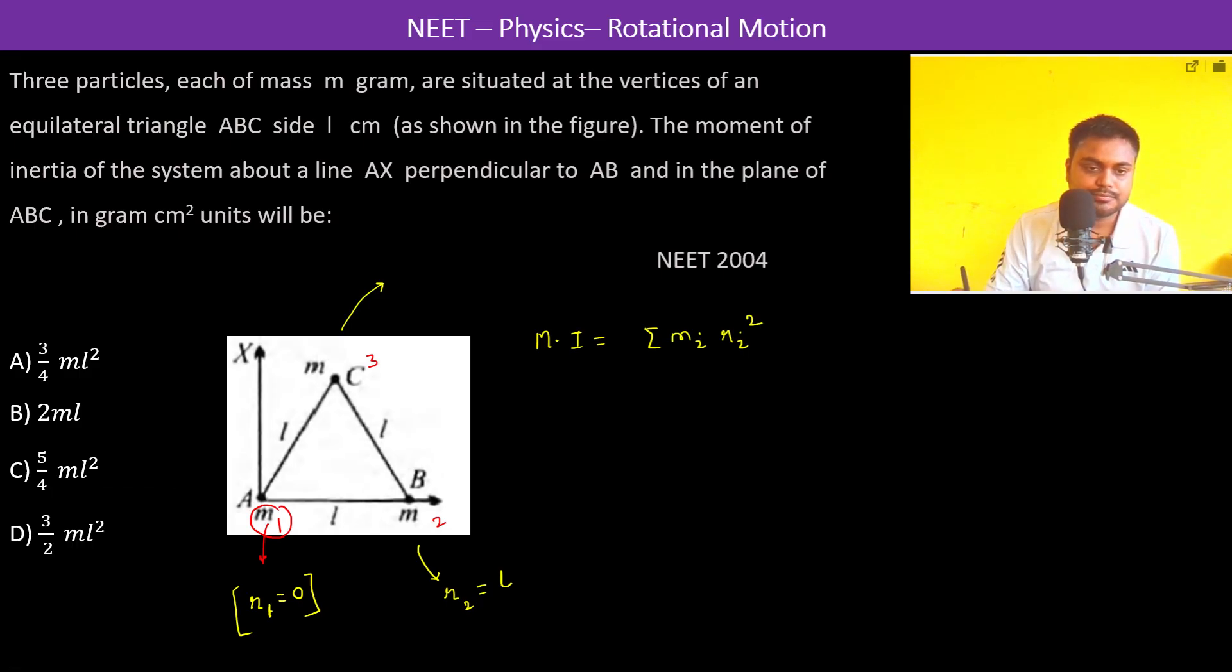Now for the third mass, since it is an equilateral triangle, therefore this is 60 degrees. If you see this, this is the 60 degree so this is also 60 degree. So this is basically l cos 60 degree which is equal to l by 2. So for the third mass, r_3 is equal to l by 2.